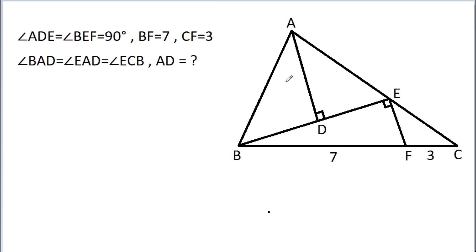In this video, we have been given that angle ADE is 90 degrees, angle BEF is 90 degrees, and BF is 7, CF is 3, and angle BAD is equal to angle EAD, and it is equal to angle ECB. Suppose theta.